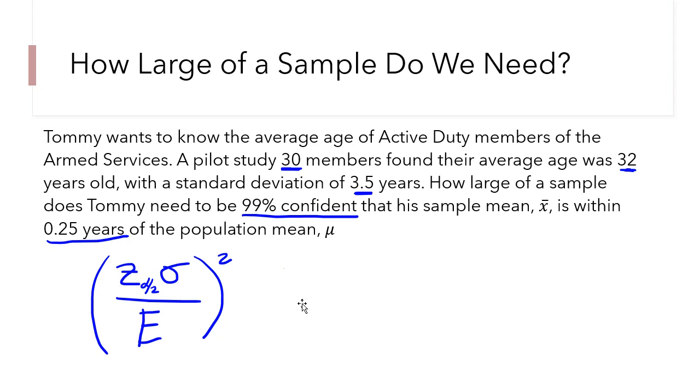Okay, so let's see, what do we know? I'll leave this z guy for a second. Alright, what about sigma? What is sigma? Sigma is the population standard deviation, right? We don't know the population standard deviation, but we do know that there was a pilot study, and it found the standard deviation was 3.5 years. So let's plug that in. We'll plug that in for sigma. So z times 3.5. Okay, this is going to be squared.